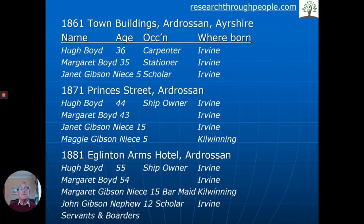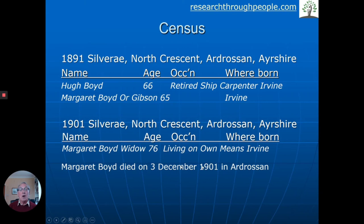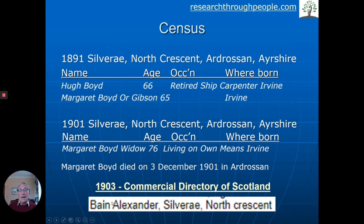The ship carried a cargo of 217 standards of deals — an expression for packages of goods. Hugh Boyd also lost another ship, the Aneta, in 1881. Building up a picture going back in time: in 1881 he was living in a hotel in Ardrossan, and the deeds show he'd acquired the land for the property in 1877 — so the family were likely in the hotel while the house was being built. In 1871 he was a ship owner; in 1861, just a carpenter. The deeds show the land was gifted to Hugh Boyd, suggesting he rose from humble carpenter to ship owner. He died in 1893; his wife Margaret in 1901; and a directory showed the new owner, Alexander Bain, was then living at Silver Eye.